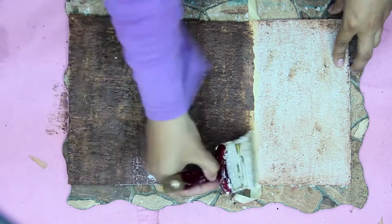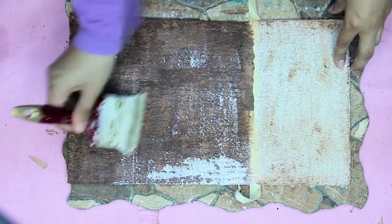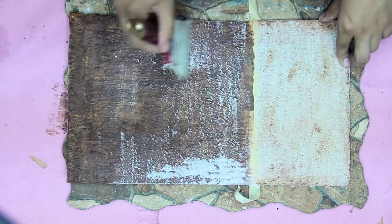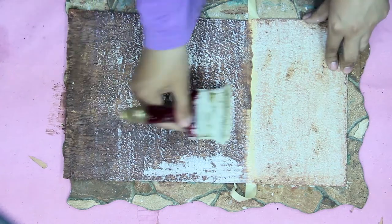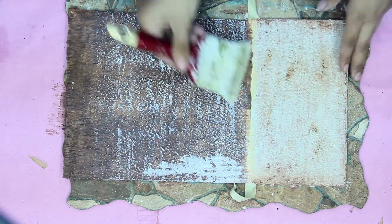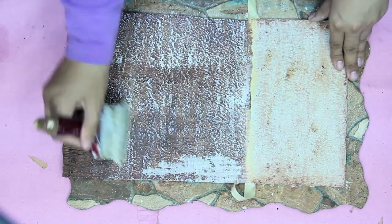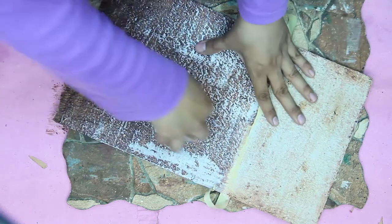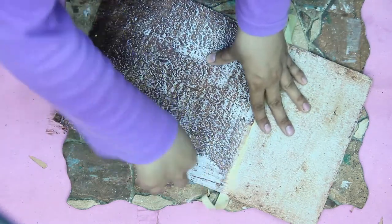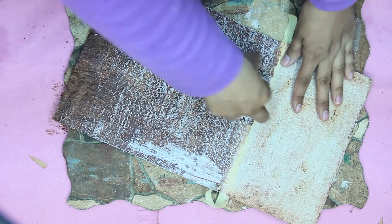After that I will add white wax onto the brown one. I will scratch the surface to give a smooth texture.